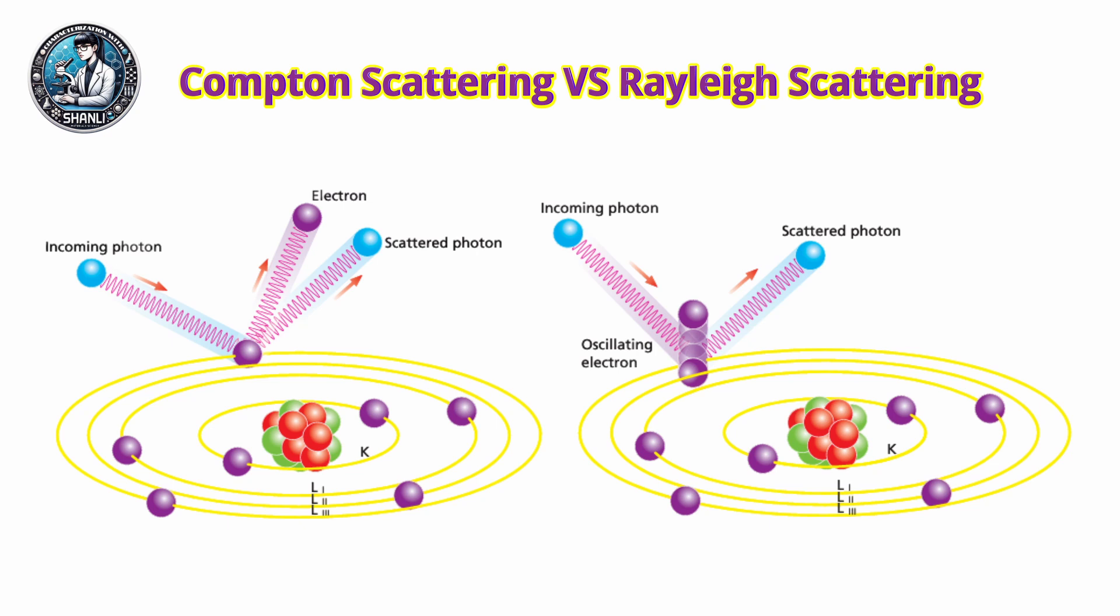Compton scattering occurs when an X-ray photon collides with a loosely bound or free electron. The photon transfers part of its energy to the electron and changes direction. As a result, the scattered photon has less energy than the original one.